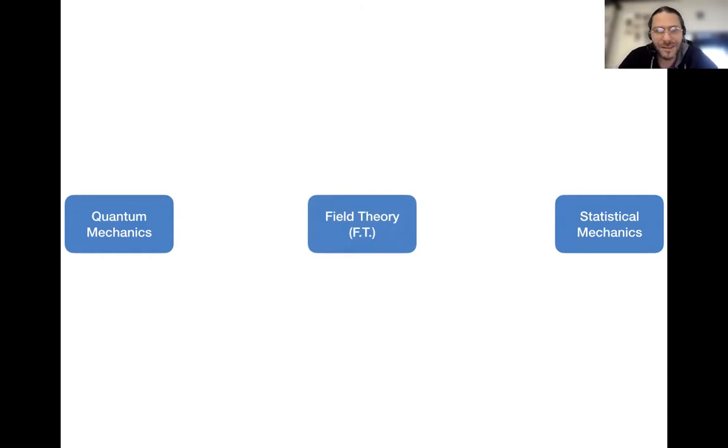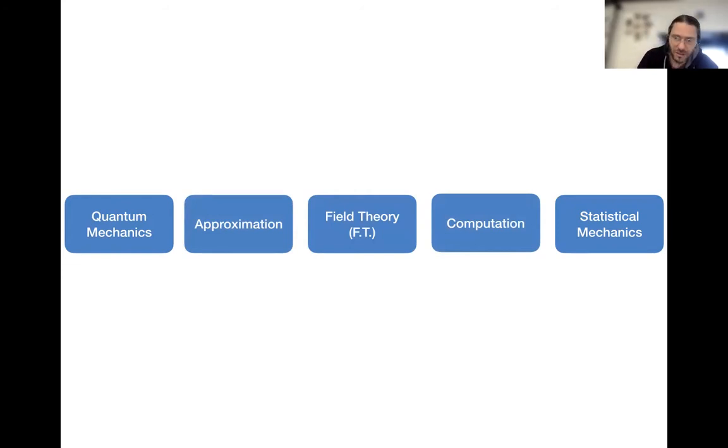But once you have written the theory, it doesn't mean you can solve the theory and make contact with experiments. And therefore, we need two more pillars to complete this chart. And they are, on the one hand, computation, and on the other hand, approximation. By computation, we refer to the act of translating a mathematical problem in a form that can be solved by a computer to any degree of accuracy. And the degree of accuracy you can reach in the calculation only depends on the amount of computational resources you might be able to provide.